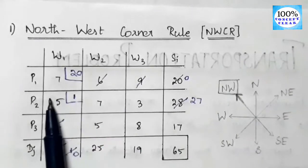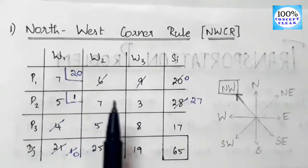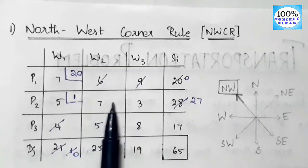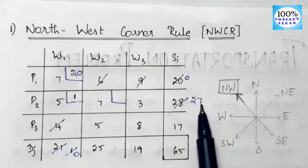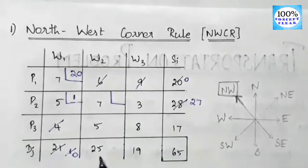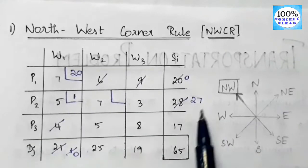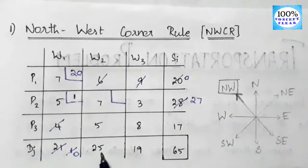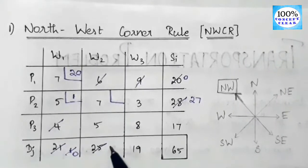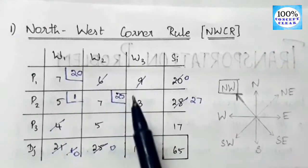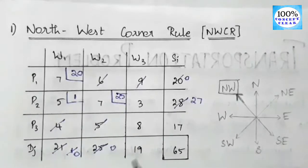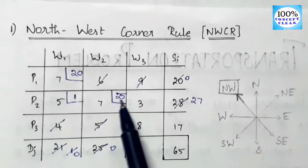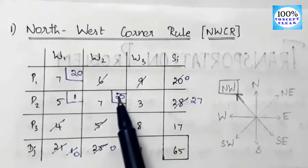The new northwest corner is the cell with cost 7 (P2–W2). Supply is 27, demand is 25; minimum is 25, so we allocate 25 here. The demand for W2 becomes 0 — cancel W2's column. Remaining supply for P2 is 27 − 25 = 2.